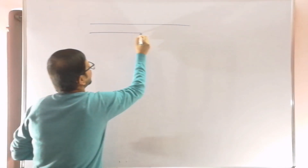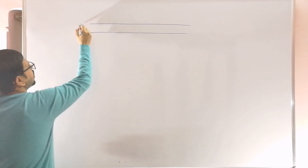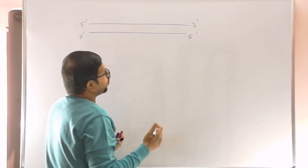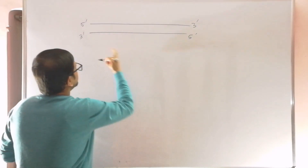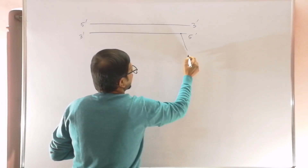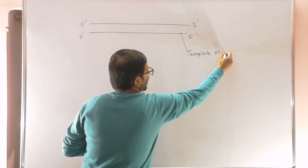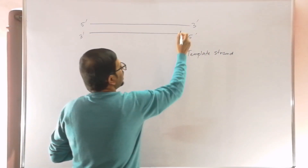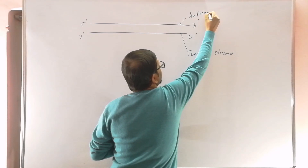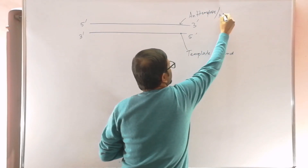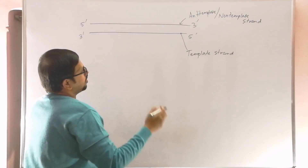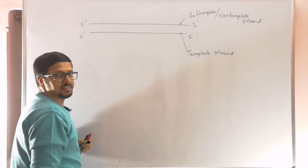Suppose this is a double-stranded DNA. This strand runs 5 prime to 3 prime, and this one runs 3 prime to 5 prime. Out of these two strands, only one will participate in transcription. Suppose the 3 prime to 5 prime strand participates — this strand will be known as the template strand. The strand that remains silent or does not participate is known as the anti-template or non-template strand, also known as the antisense strand.